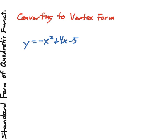So we have here y, also known as f of x, is equal to the opposite of x squared plus 4x minus 5.